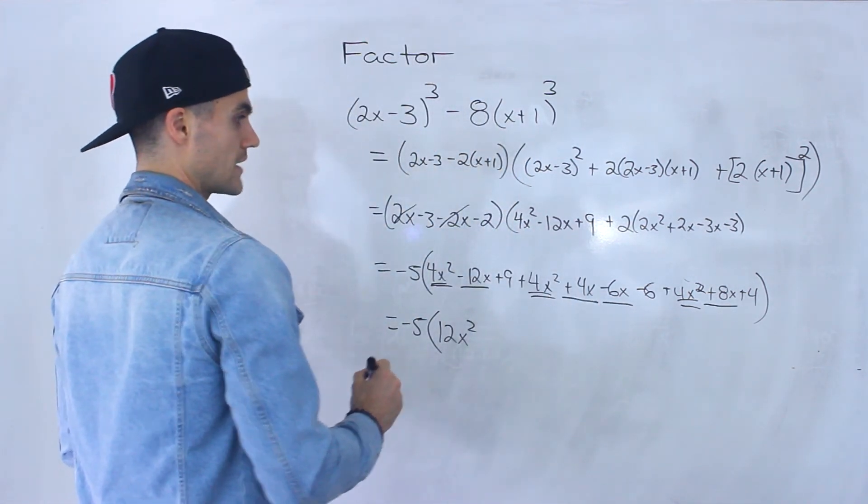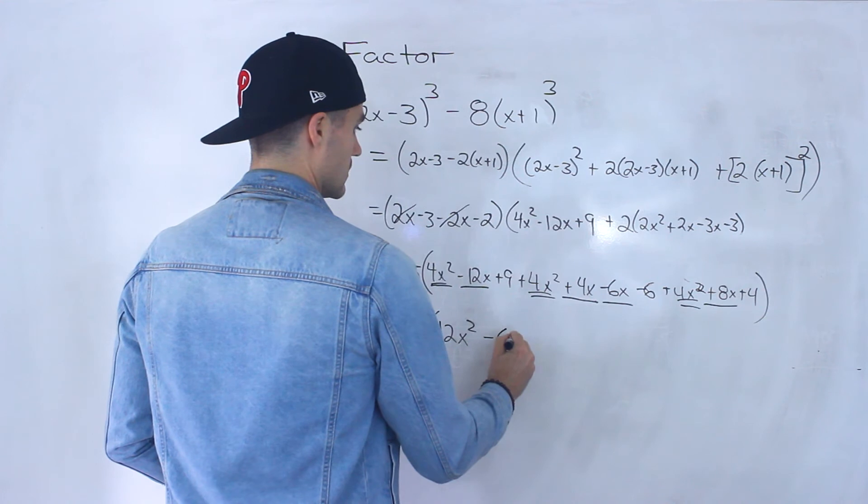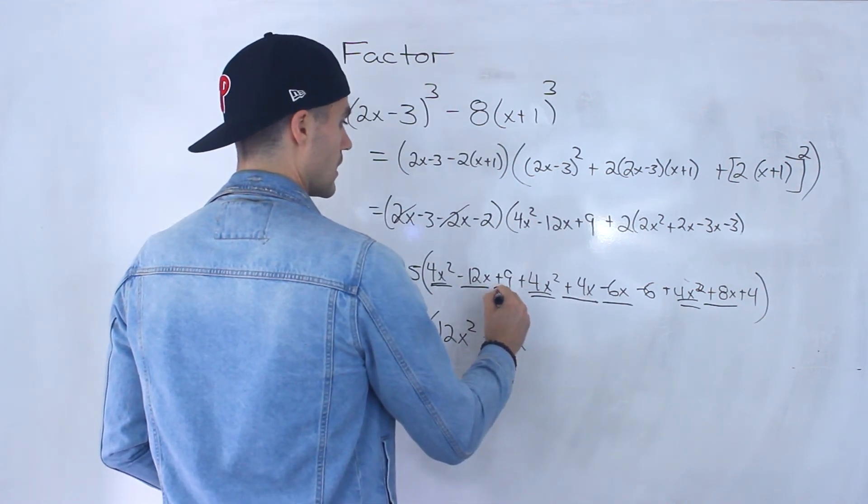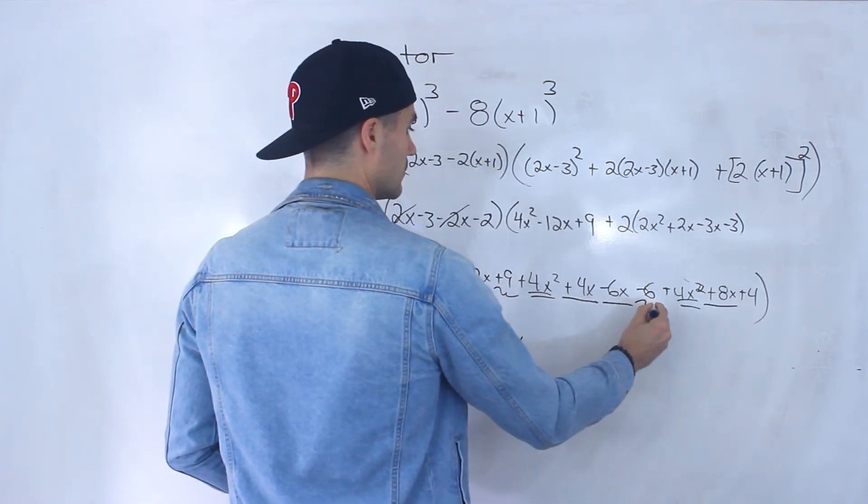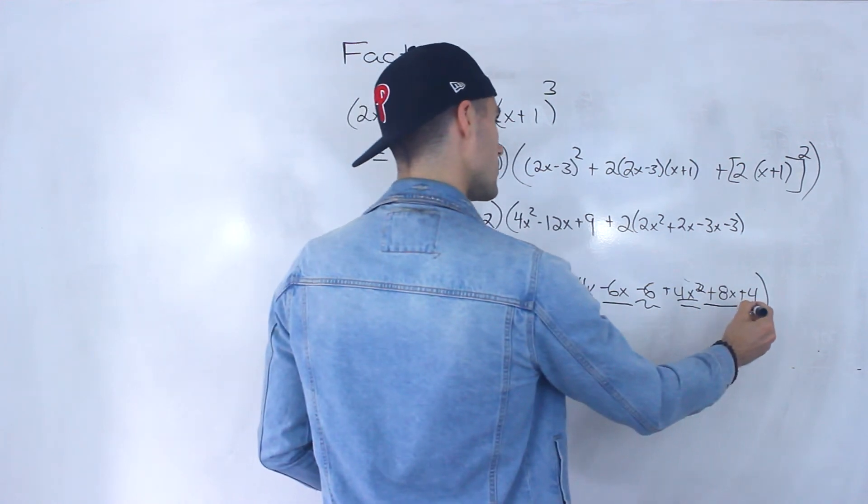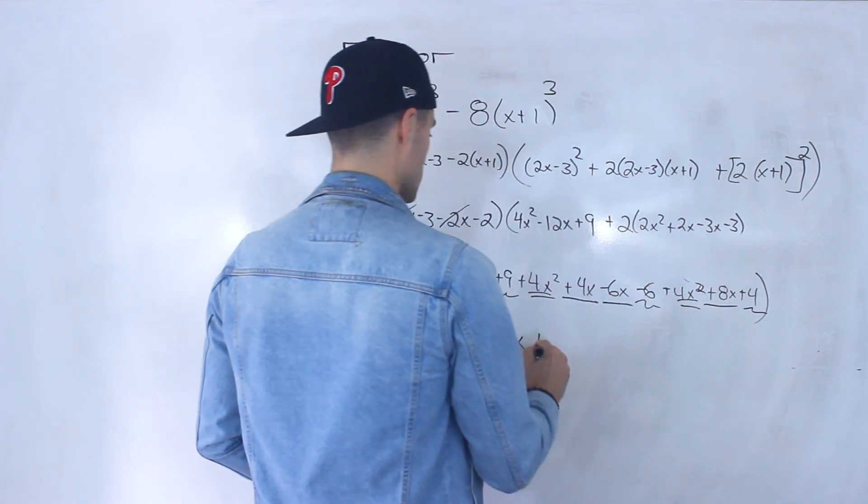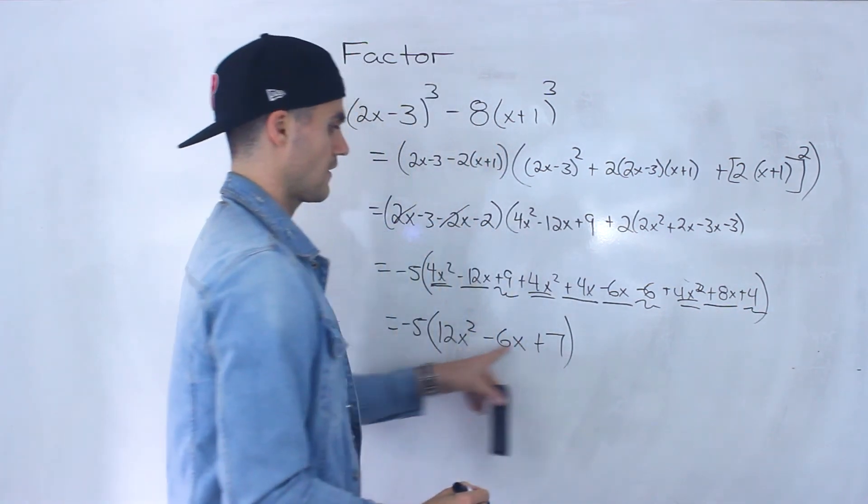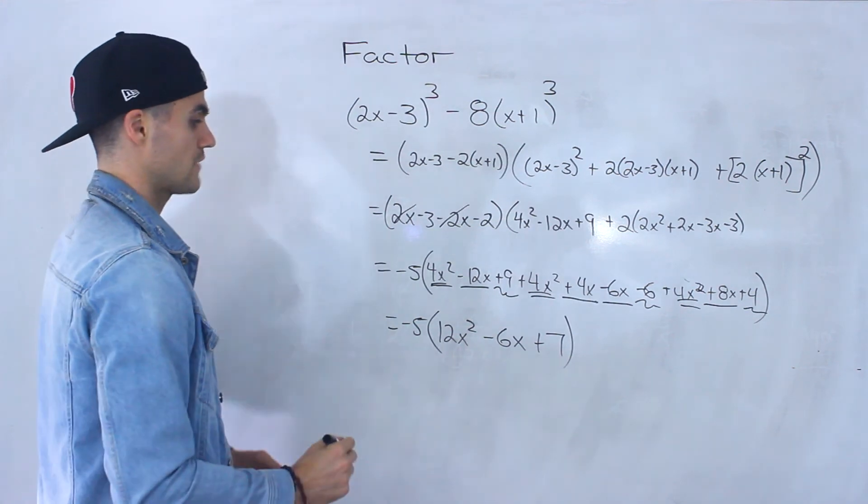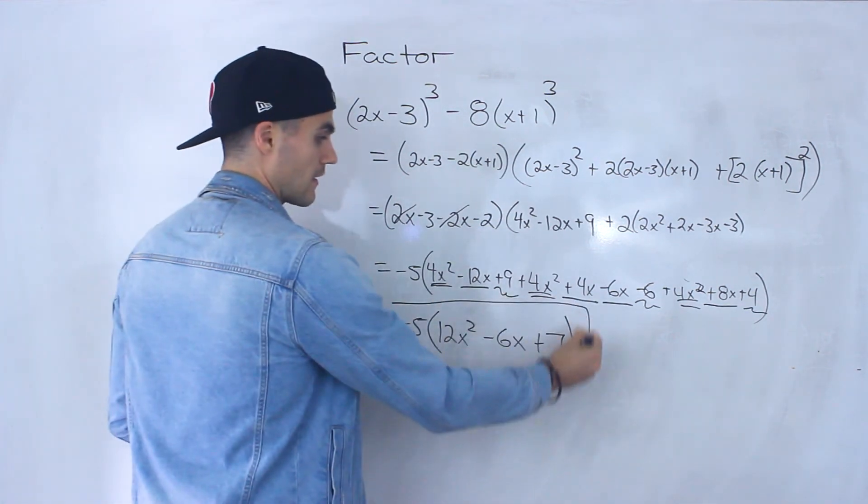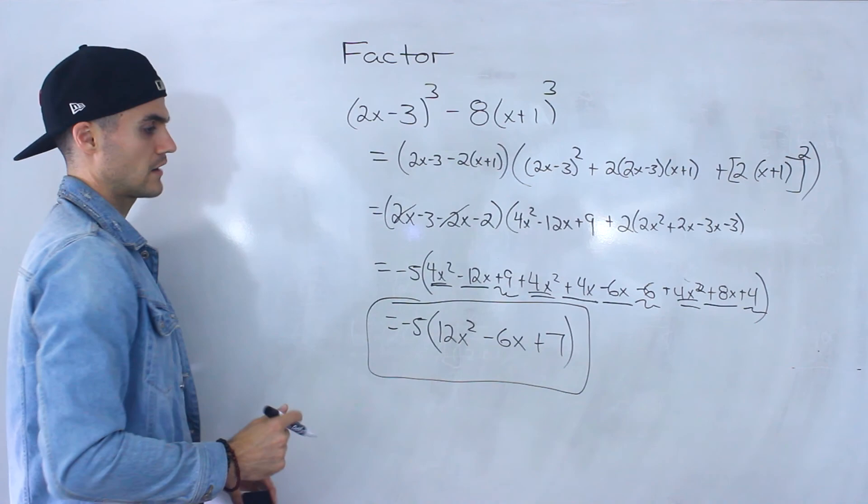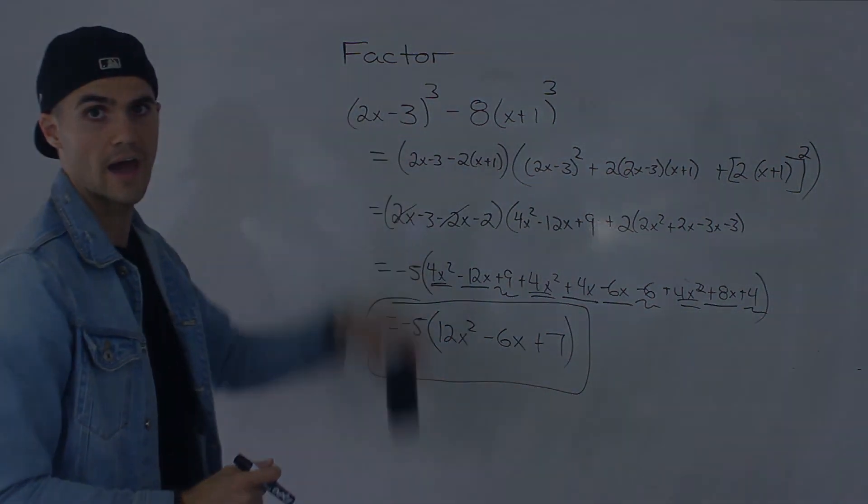And then we got 9 minus 6, which is 3 plus 4, which is 7. So we'd have plus 7 here. And then this here would not factor. And so that there ends up being your final factored form for that expression.